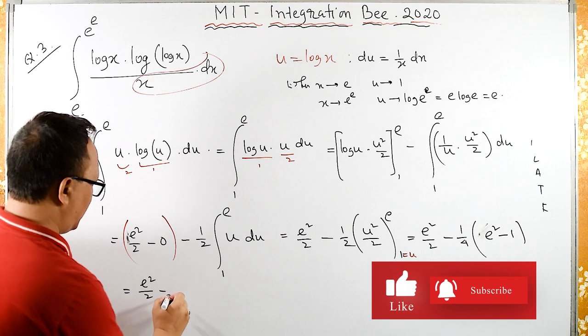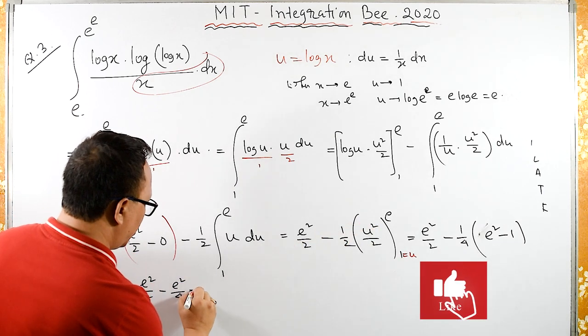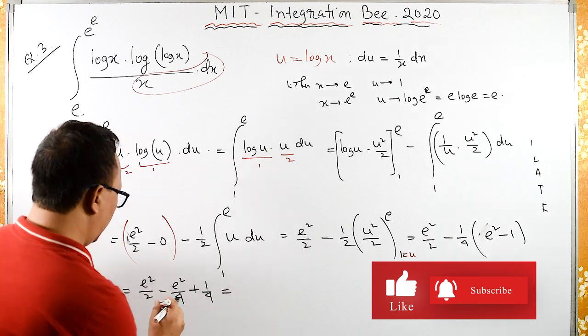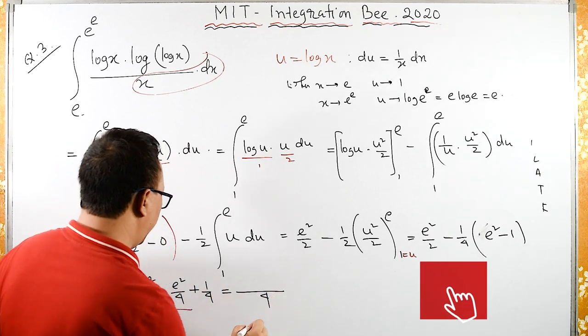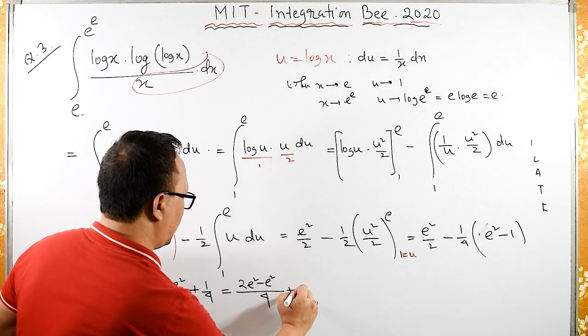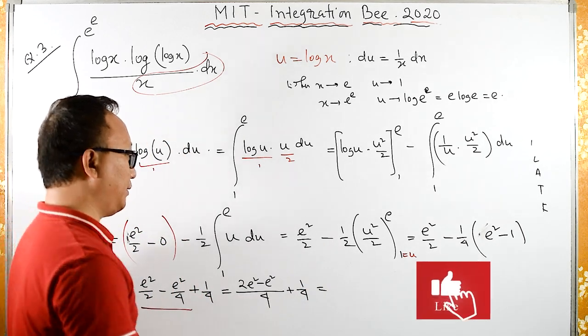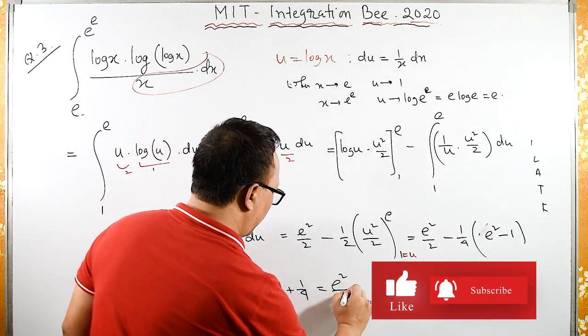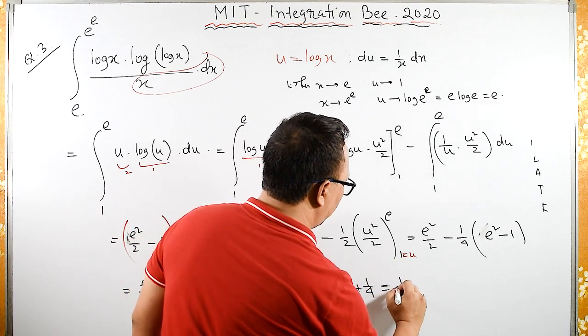So we have e squared upon 4 plus 1 by 4. Taking LCM 4: 2e squared minus e squared plus 1, all over 4. This simplifies to e squared plus 1, all over 4.